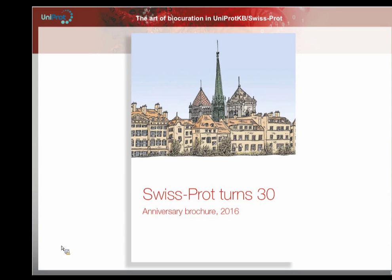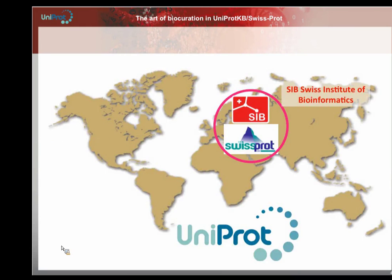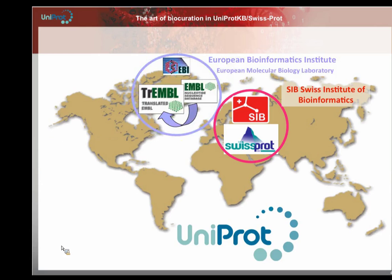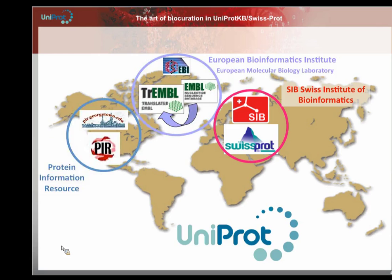SwissProt constitutes and represents the world's most comprehensive catalogue of information on proteins. It is recognized as a gold standard reference by the scientific community. In 2002, the SIB SwissProt group of Geneva, together with the European Bioinformatics Institute in the UK and the Protein Information Resource in the US, joined together to found the UniProt Consortium — the Universal Protein Consortium.